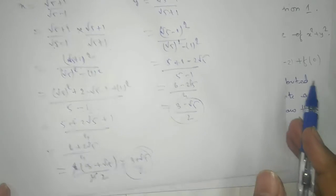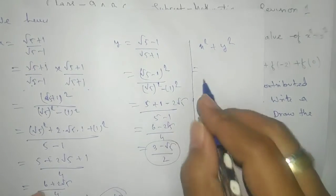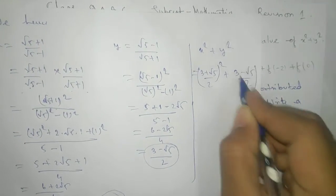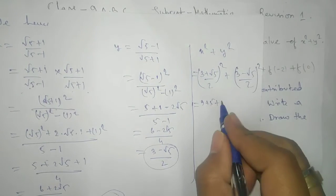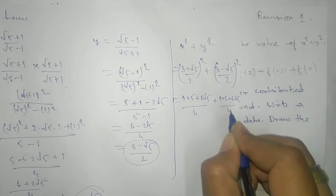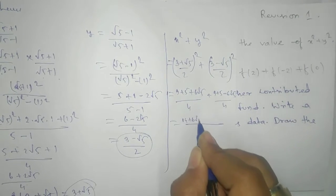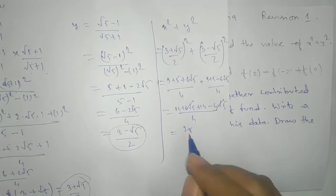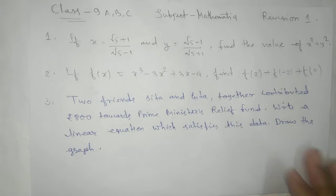Now our target is x squared plus y squared. Substituting, we get (3 plus root 5 by 2) whole square plus (3 minus root 5 by 2) whole square. Expanding: the numerator gives (9 plus 5 plus 6 root 5) plus (9 plus 5 minus 6 root 5), all over 4. The 6 root 5 terms cancel, giving 14 plus 14 equals 28, divided by 4 equals 7. Our answer is 7.